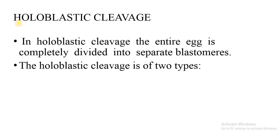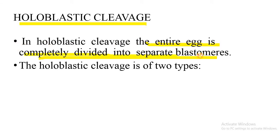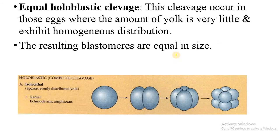In holoblastic cleavage, the entire egg is completely divided into separate blastomeres. Holoblastic cleavage is again of two types: equal holoblastic cleavage and unequal holoblastic cleavage.